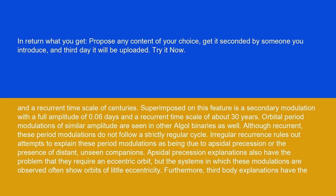Superimposed on this feature is a secondary modulation with a full amplitude of 0.06 days and a recurrent time scale of about 30 years. Orbital period modulations of similar amplitude are seen in other Algol binaries as well. Although recurrent, these period modulations do not follow a strictly regular cycle.